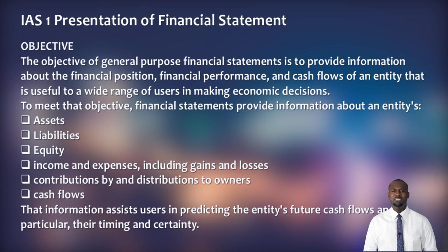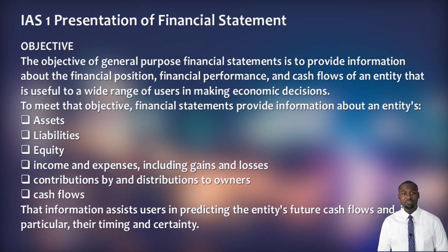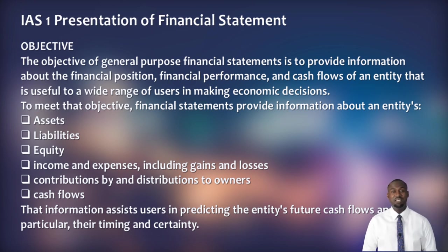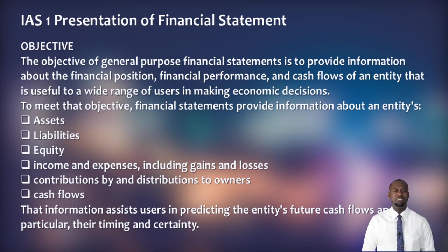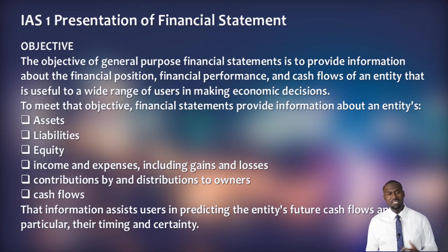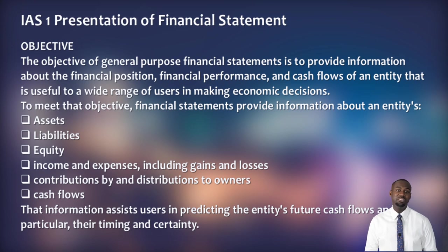To meet this objective, the financial statement must provide information on: assets, liabilities, equities, income and expense including all gains and losses, contribution by and to owners, and cash flows. A general purpose financial statement must provide information on all these things — assets, liability, equity, income and expense, contribution by and from owners, and cash flow — so as to help users make economic decisions.